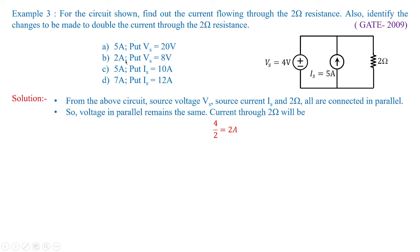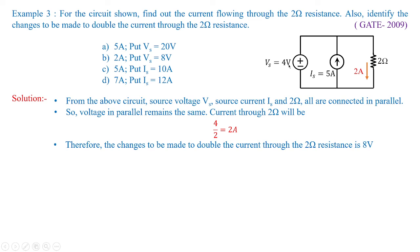From the options, 2 amperes is the correct answer — option B. To double the current from 2 amperes to 4 amperes, we change the voltage source: Vs equals 8 volts, because 8 divided by 2 ohms gives 4 amperes. So 8 volts is the required change. The current through 2 ohms is 2 amperes and the voltage needed for doubling is 8 volts. You need to carefully answer based on what the question is asking.